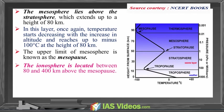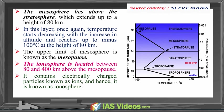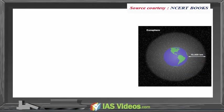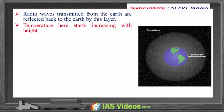The ionosphere is located between 80 and 400 kilometres above the mesopause. It contains electrically charged particles known as ions, and hence it is known as the ionosphere. Radio waves transmitted from the earth are reflected back to the earth by this layer. Temperature here starts increasing with height.